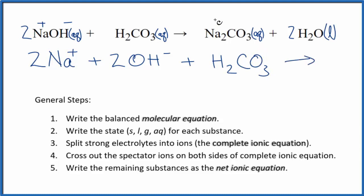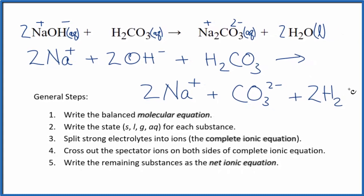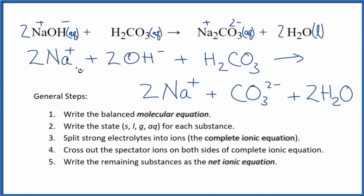On the product side, we had a plus, and then this whole carbonate is always 2 minus. So we'll have two sodium ions, just like the reactants, plus the one carbonate ion, CO3 2 minus, and we don't split liquids apart in net ionic equations, so we'll have H2O, two of them. So this is our complete ionic equation.